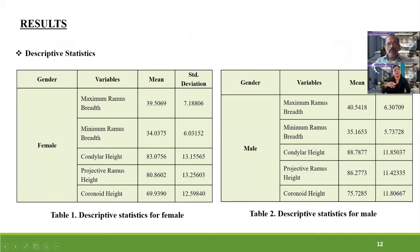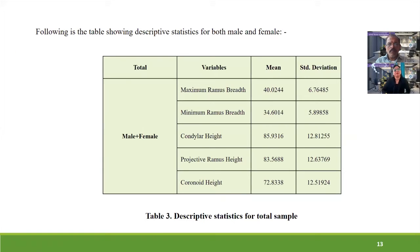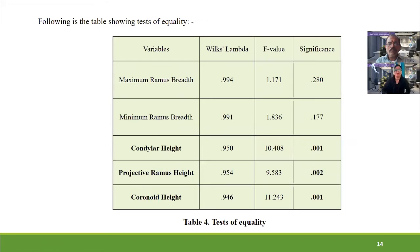Comparing the two tables, all parameters for the male sample recorded greater values than the female parameters. Descriptive statistics were calculated for the total sample including both male and female. The test of equality was performed to calculate Wilkes lambda, F value, and P value. Wilkes lambda shows the association between variables — a value of one indicates perfect association, whereas a value of zero indicates no association.